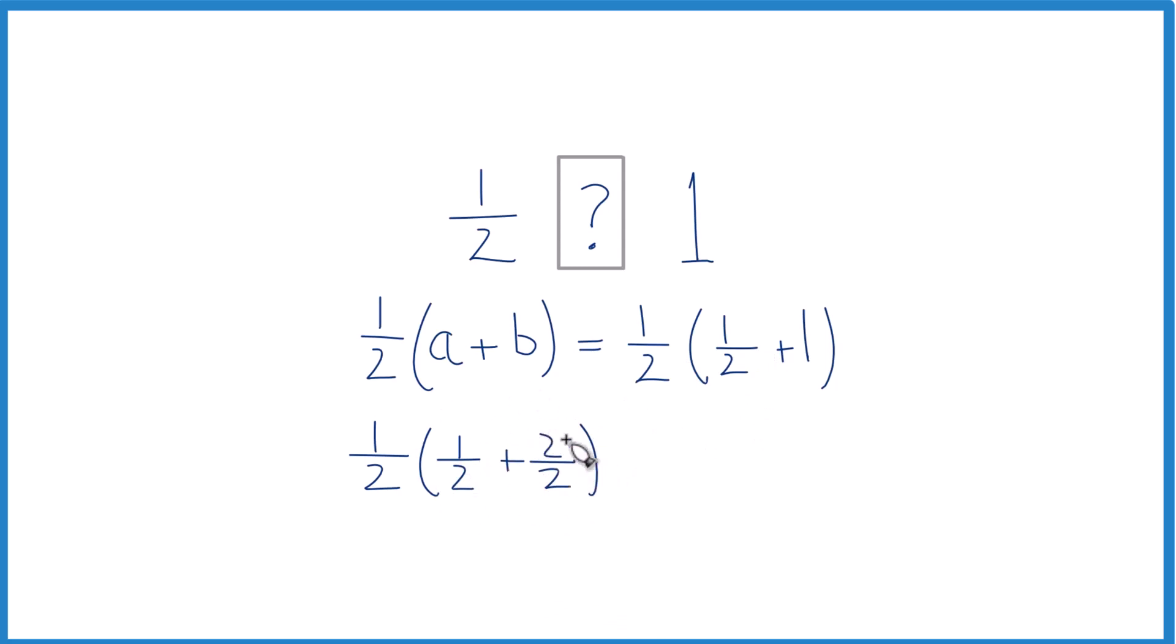So we end up with one-half times - let's see, one plus two, that's three. So we add the numerators, and when we're adding fractions, the denominators since they're the same, we just bring that right across. And now we have one times three, that's three, two times two, that's four.